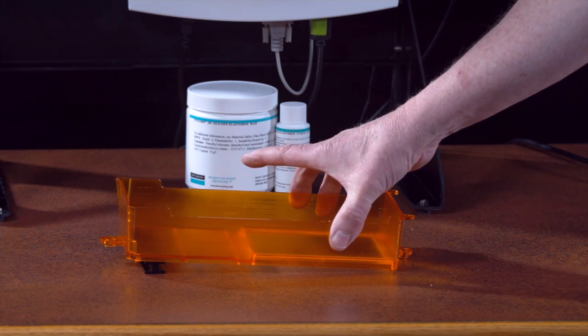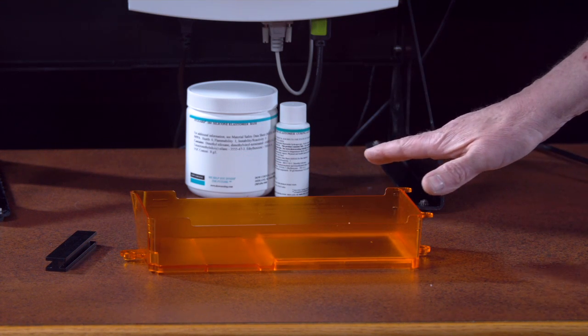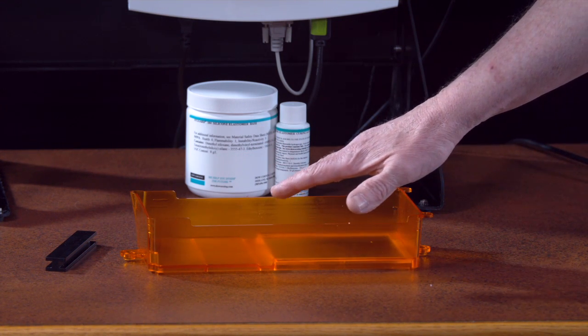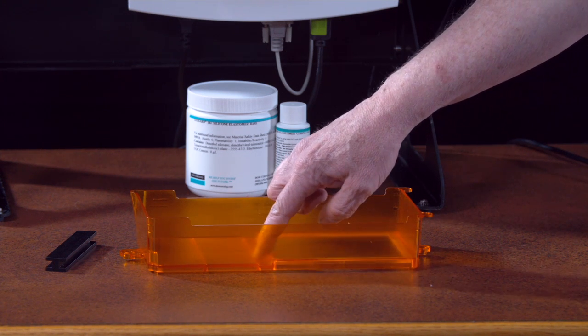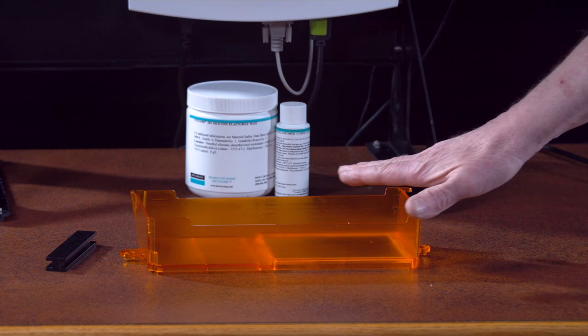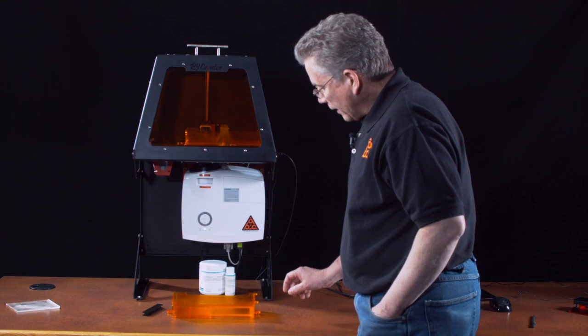And what will happen is, over time, that PDMS will flow over the dam and get caught in this little trough, the excess will. And that ensures you get an even flat coating across your entire window.